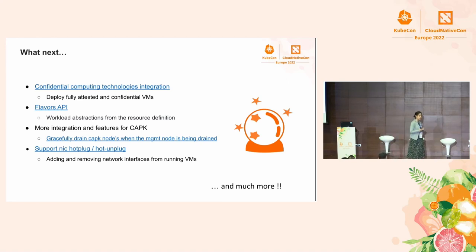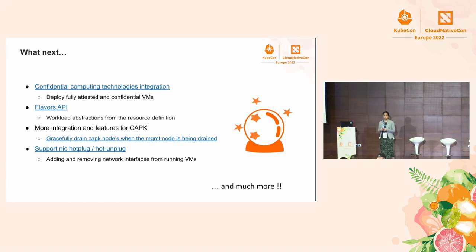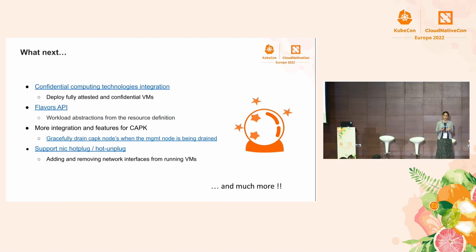One of the expected traditional features for virtualization platforms is hot-plug of various kinds of resources. This is one of the main challenges we face with Kubernetes because of pod immutability — if you want to change resources assigned to a pod, it usually means restarting the pod, which is particularly problematic for virtual machines. We already have volume hot-plug implemented, and we also plan to add hot-plug for other resources like adding and removing network interfaces from running virtual machines.